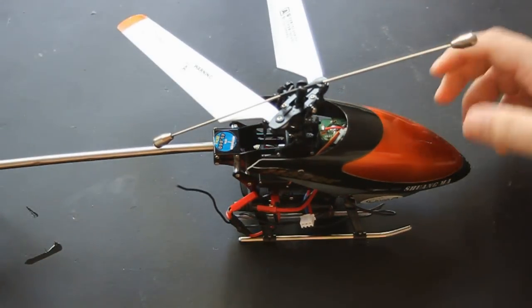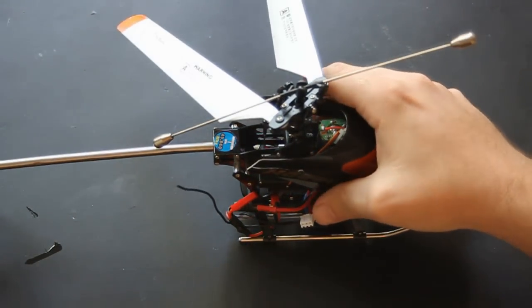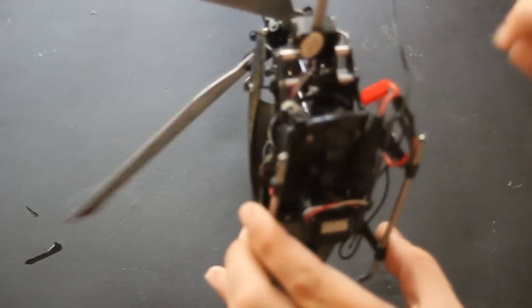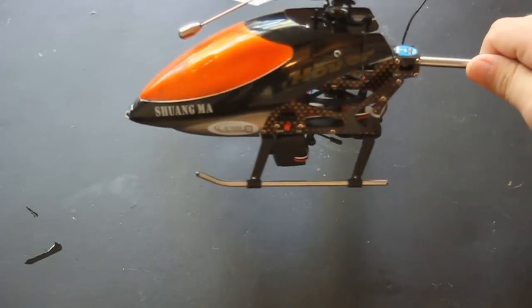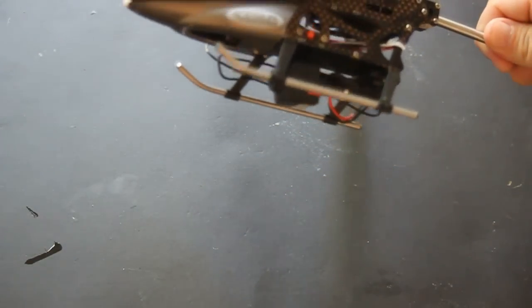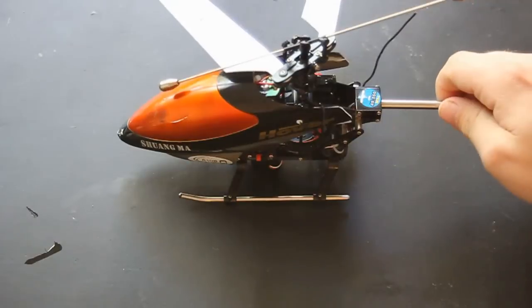I have here my Double Horse 9100 and I've already mounted this camera to it and flown around for quite some time and it works great. We're going to talk about how do you get this attached to your model airplane or helicopter here.